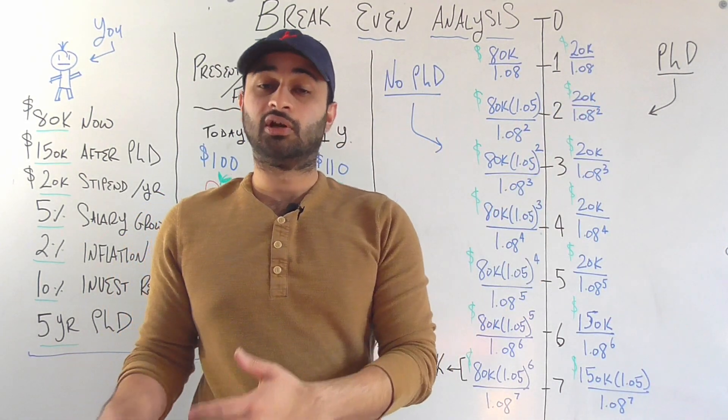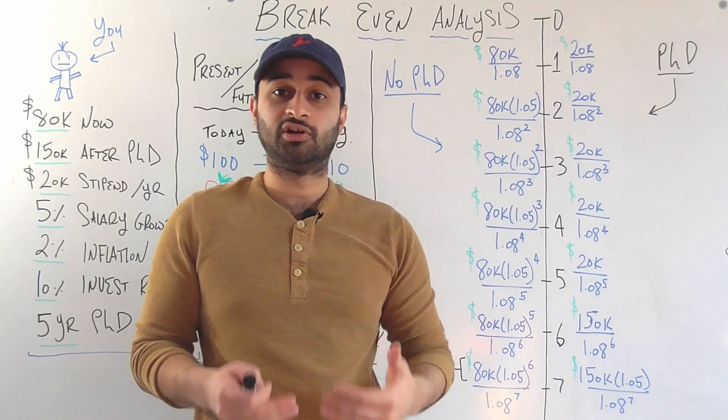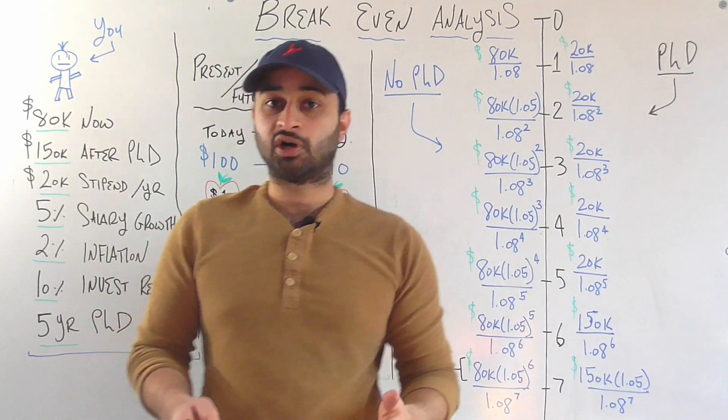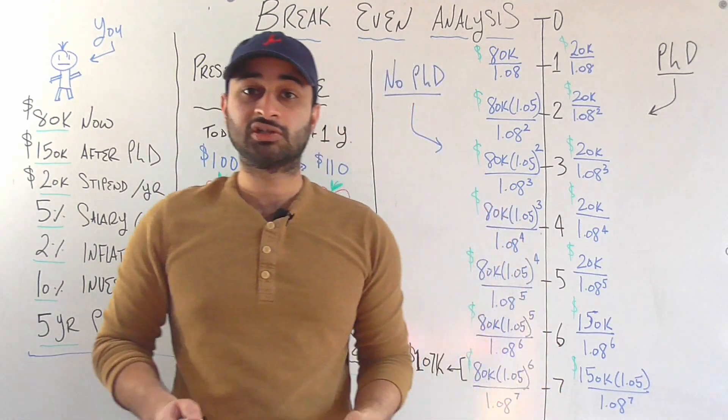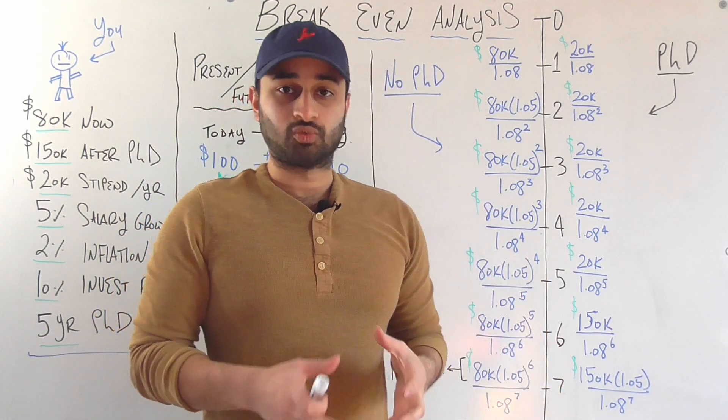The other option is that you will get your PhD. So you're going to take five years, you're going to quit your job first, it's a full-time PhD, and you're going to take five years to get your PhD. And then you will start making the $150,000, start getting raises on that.